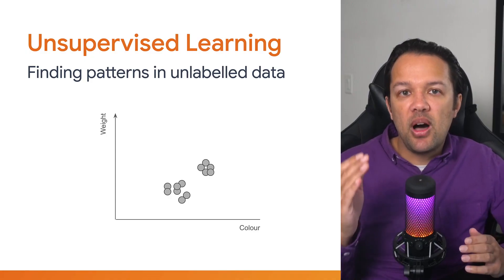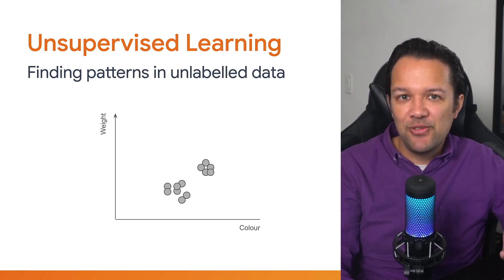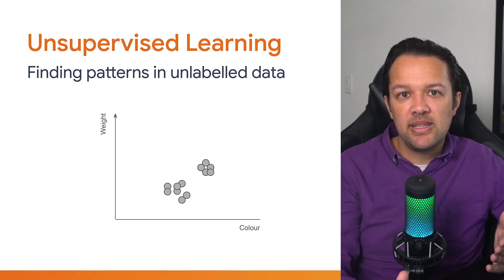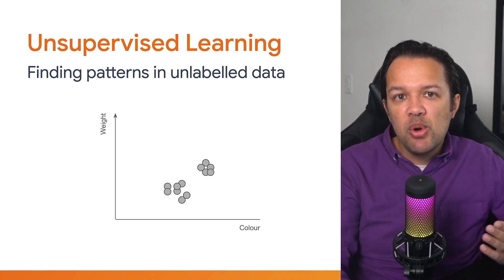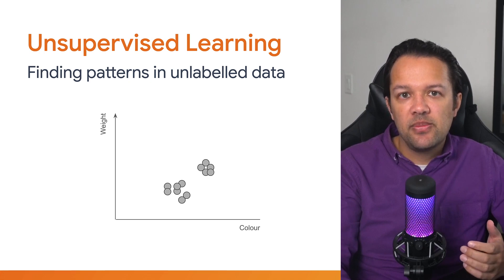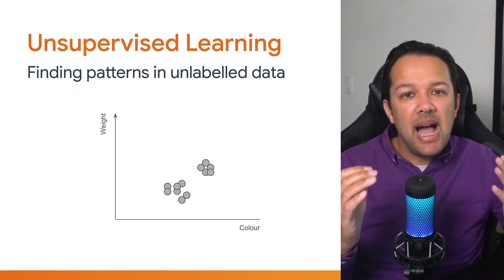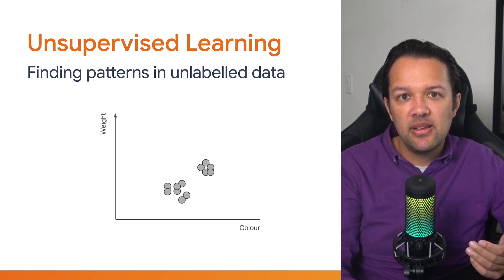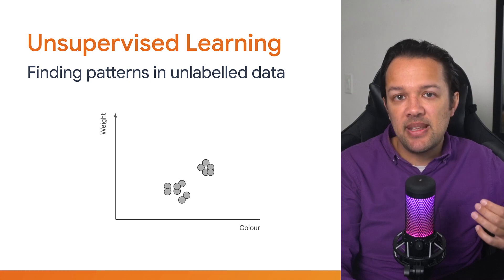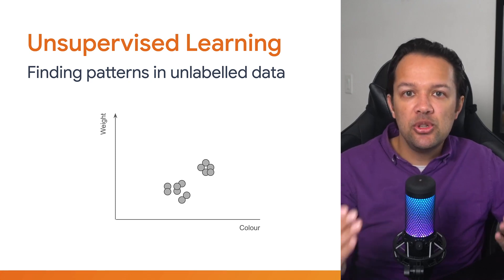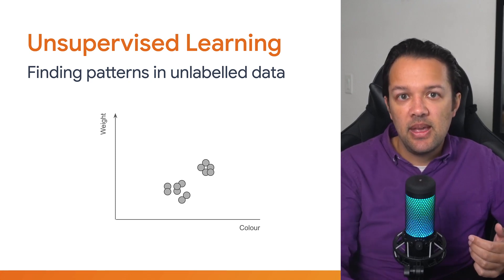Now next up we've got unsupervised learning. Taking the same example as before, you've got a bunch of example data plotted on the graph as shown, but in this situation you don't know what the labels are in advance. The only thing you might know is how many classes you expect to discover from the data. Now as you know from the previous example, the data shown here represents apples and oranges, which means two possible classes of data.